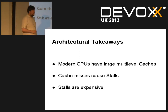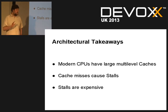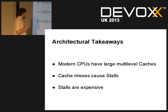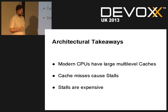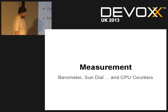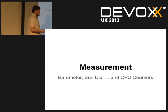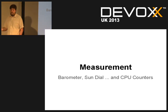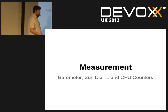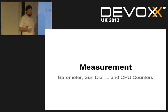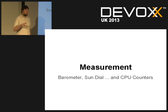Key architectural takeaways — if you remember only three things from this section: modern CPUs have multi-level caches; cache misses cause CPU stalls; and stalls are expensive. When you want to do any performance tuning or analysis, you need to take measurements. You may be familiar with execution profilers, memory profilers, GC logs, vmstat — but a lot of those don't account for CPU-level measurements, so you need a different approach.